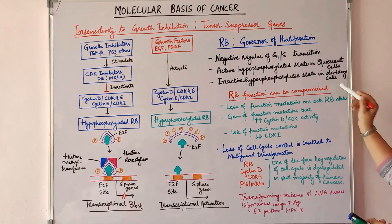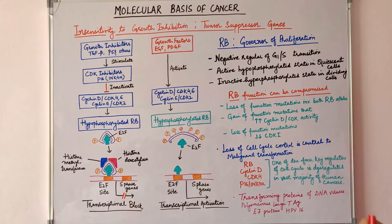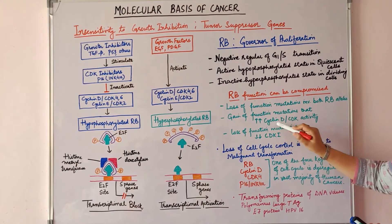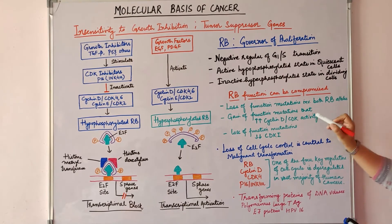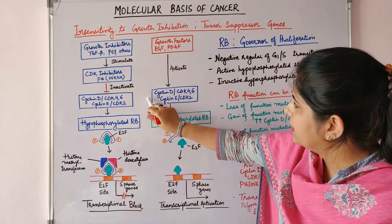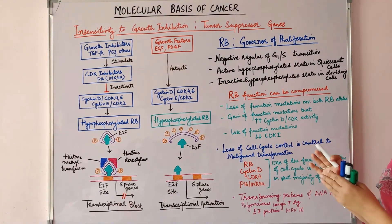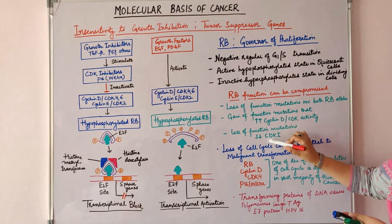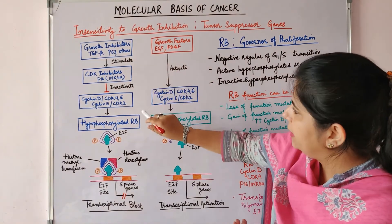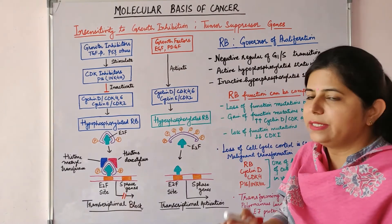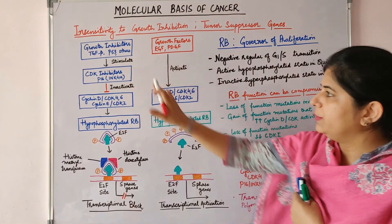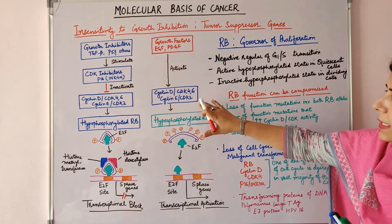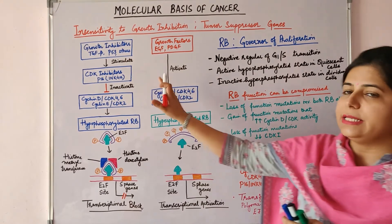RB function can be compromised if there is a loss-of-function mutation involving both RB alleles, or there is gain-of-function mutation leading to upregulation of cyclin D-CDK complexes. When there is upregulation of this activity, it leads to hyperphosphorylation and inactivation of RB. Similarly, if there is a loss-of-function mutation in the CDK inhibitors, the cyclin D-CDK complexes will not be inhibited, also leading to hyperphosphorylation of RB.